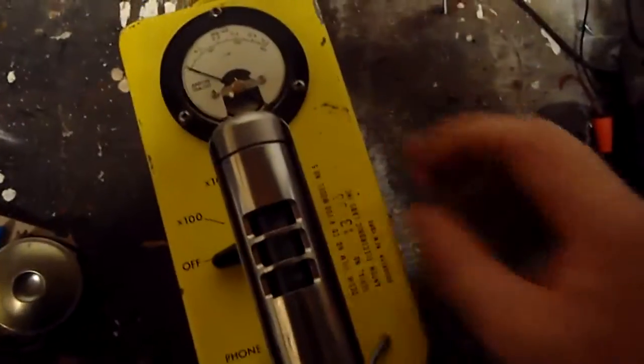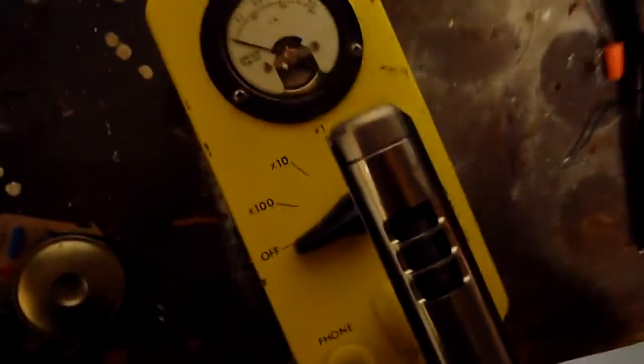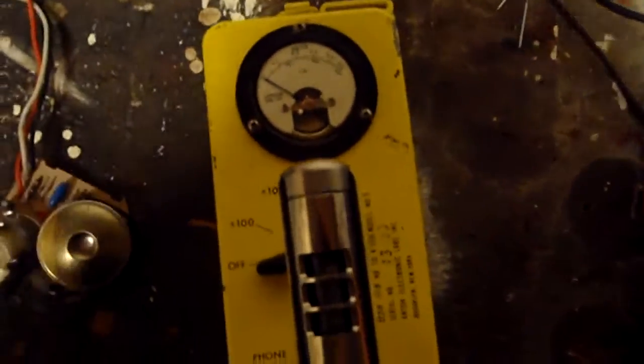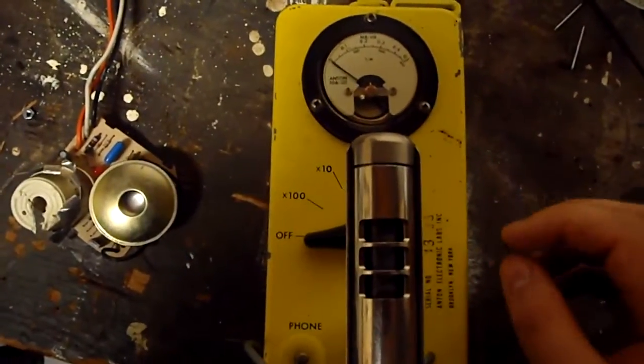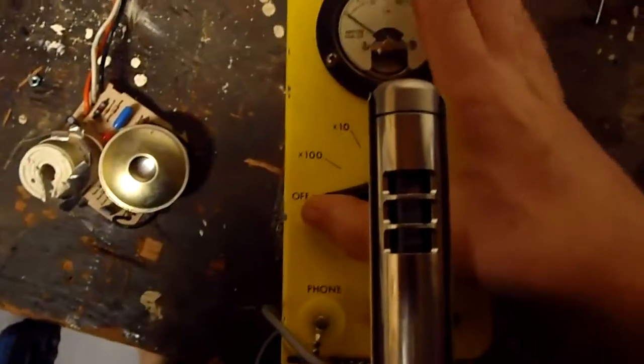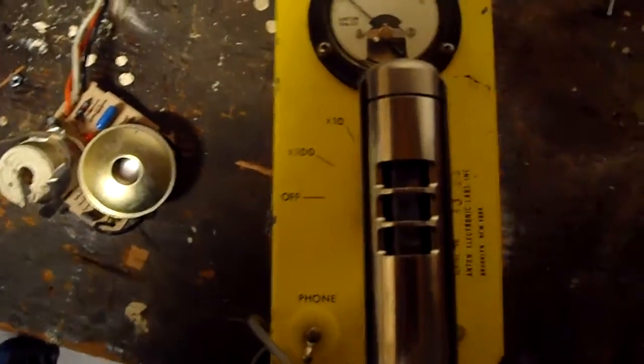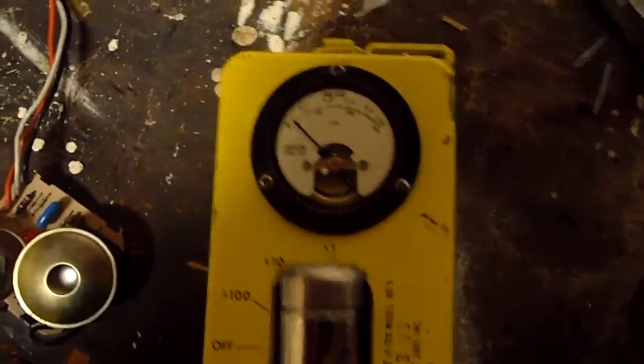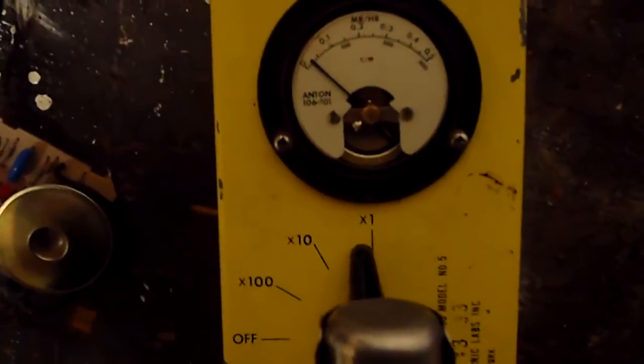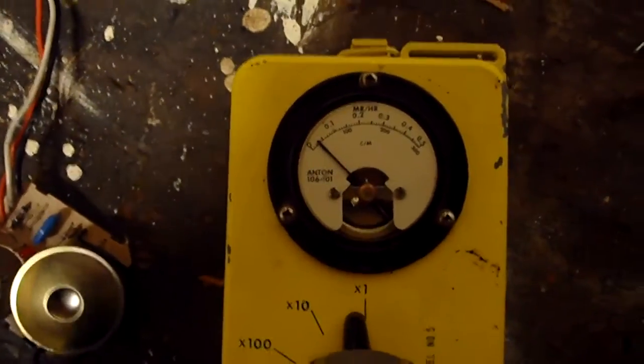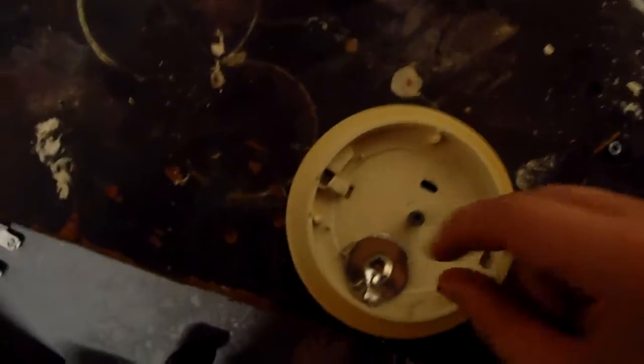Anyways, this is a Geiger counter. It can only read gamma and beta radiation, as far as I know. I'm just going to show you a little bit about it. Note that this is on the highest possible setting, so it's very sensitive right now, and will detect very small amounts of radiation. Keep that in mind, though.